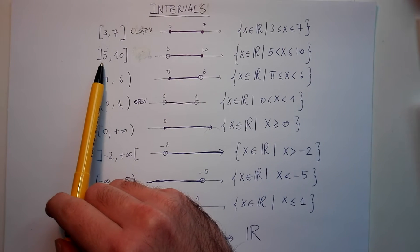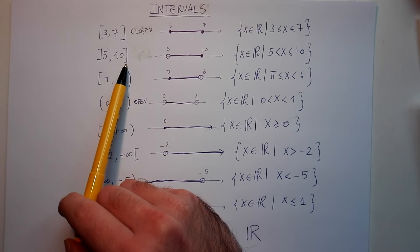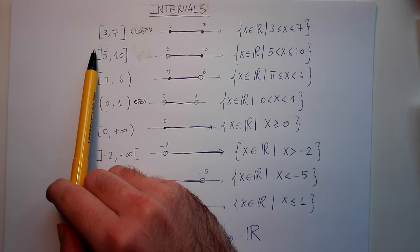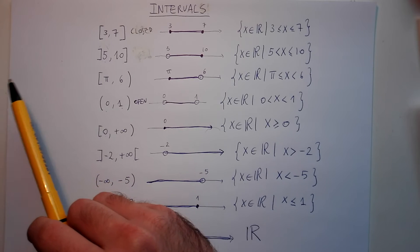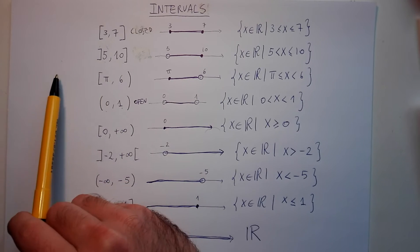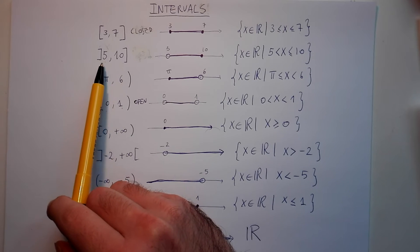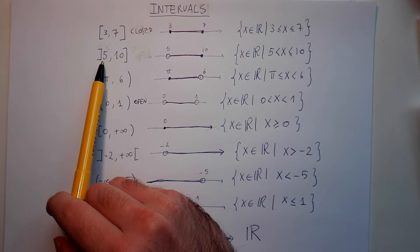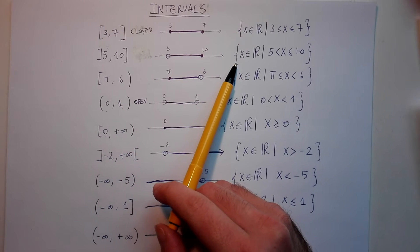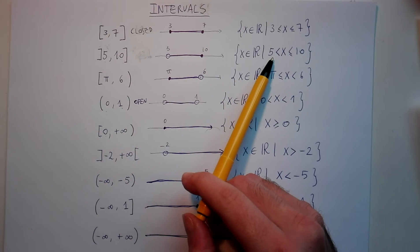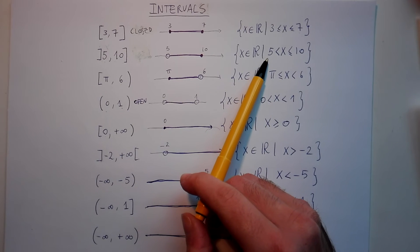When you see this kind of notation, when one square bracket is pointing not to the numbers but on the other side, that means all the numbers between five and ten, excluding five. So the set of real numbers between five and ten, including ten, excluding five.